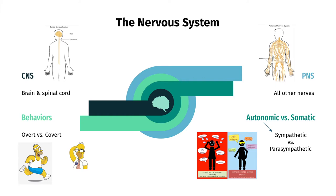The peripheral nervous system can be further divided into autonomic, or involuntary, and somatic, or voluntary, nervous systems. The autonomic system can be even further subdivided into the sympathetic, or fight-or-flight system, and parasympathetic, or calming, rest-and-digest system.